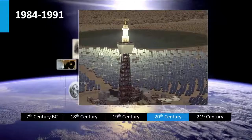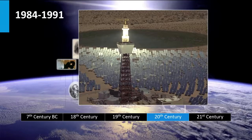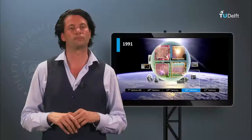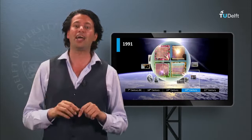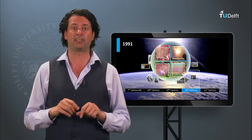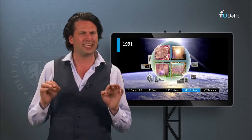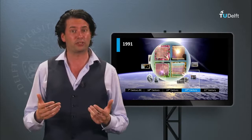From 1984 up to 1991 the largest solar thermal energy generating facility in the world was built. These 9 solar plants built in the Mojave Desert in California have a combined capacity of 354 MW. In 1991 the first high-efficiency dye-sensitized solar cell was published by the École Polytechnique Fédérale de Lausanne in Switzerland by Michael Grätzel and co-workers. The dye-sensitized solar cell is a kind of photoelectrochemical system in which a semiconductor material based on molecular sensitizers is placed between a photoanode and an electrolyte. We will discuss this technology in week 6.